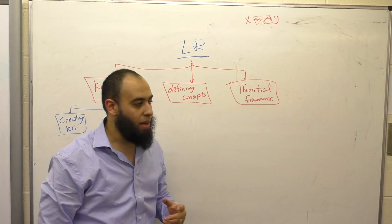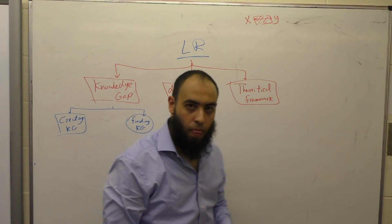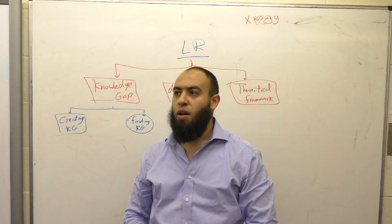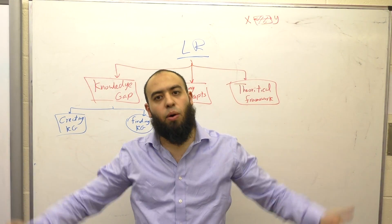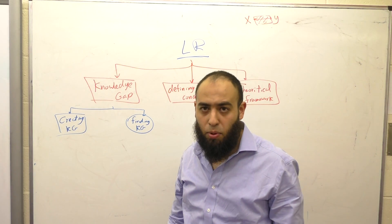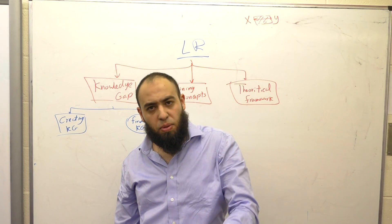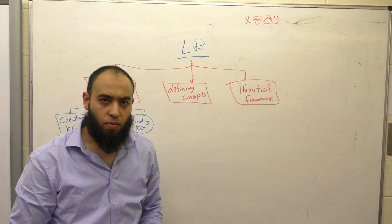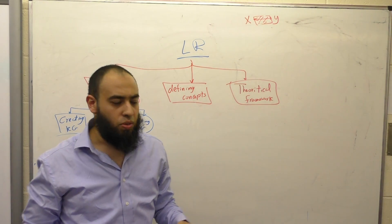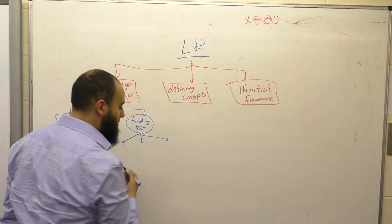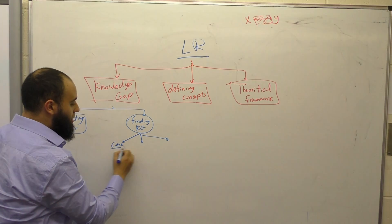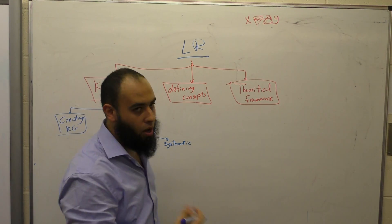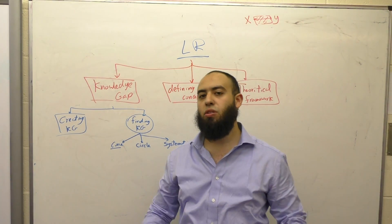So how can I find the hole in the wall and say this is a knowledge gap? Science is too big — no one can manage all of science. All I need to do is convince people that there is a knowledge gap. There are many schools. I will explain three big schools. I call them the funnel one, the circle one, and the systematic one.